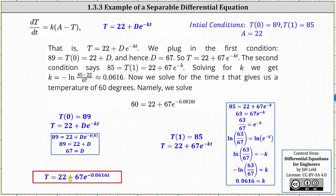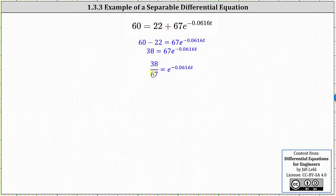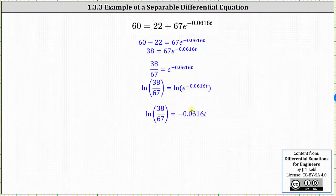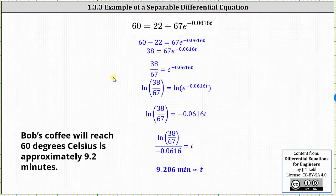So now we have the particular solution: big T equals 22 plus 67 times e raised to the power of negative 0.0616t. Now we can finally answer the question — how long it will take for the coffee to reach 60 degrees Celsius — by solving big T of t equals 60, meaning we substitute 60 for big T and solve for little t. If we first subtract 22 on both sides, then divide both sides by 67, then take the natural log of both sides, the right side simplifies to negative 0.0616t. Dividing both sides by negative 0.0616 and going to the calculator, we get t is approximately 9.206 minutes. This means Bob's coffee will reach 60 degrees Celsius in approximately 9.2 minutes, and therefore Bob should wait 9.2 minutes before drinking his coffee.